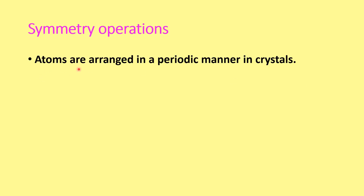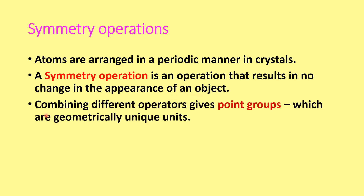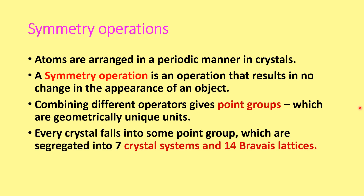As we know, atoms are arranged in a periodic manner in crystals, and a symmetry operation is an operation that results in no change in the appearance of an object or crystal. Combining different operators gives different point groups, which are geometrically unique structures. Every crystal falls into some point group, segregated into 7 crystal systems and 14 Bravais lattices, which we discussed in the last lecture.